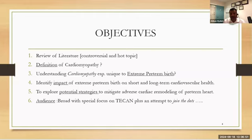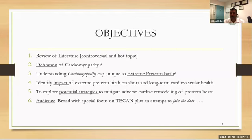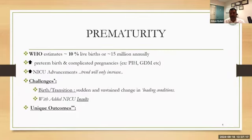Today's objectives: we'll review the literature, talk about definitions, understand the unique cardiomyopathy related to extreme preterm birth, identify short-term and long-term impacts, and explore some strategies. I've tried to keep this talk broad for junior trainees and early career colleagues. WHO says about 10% of live births in the world are premature, about 15 million annually, and this number keeps increasing with complicated pregnancies and advancing medical capabilities.